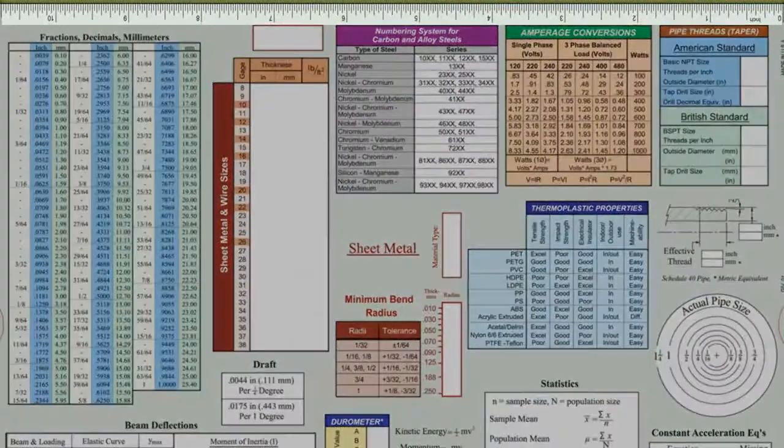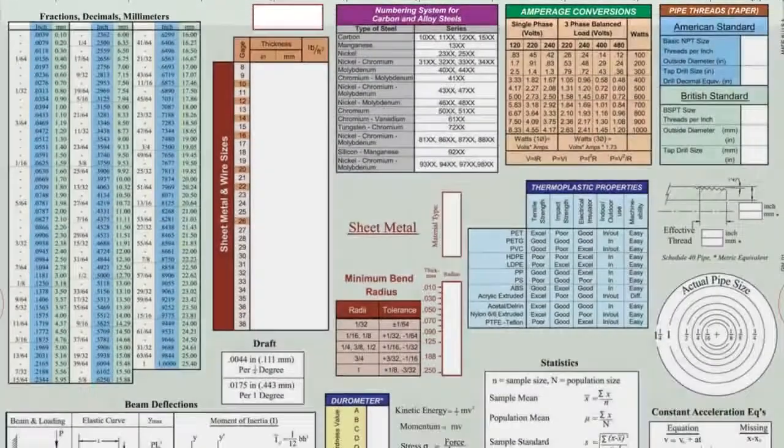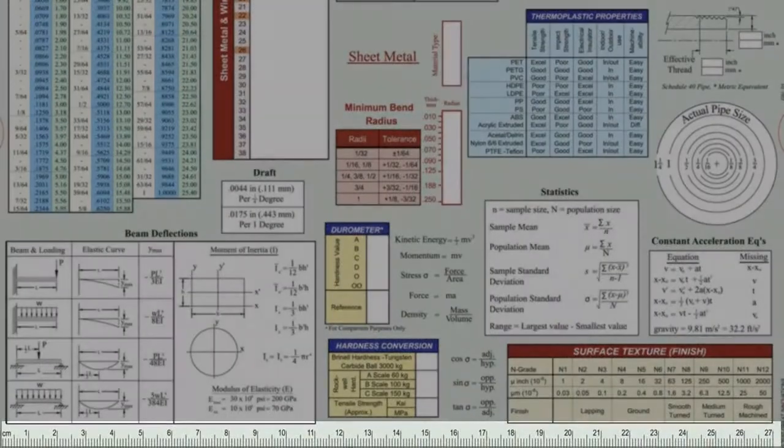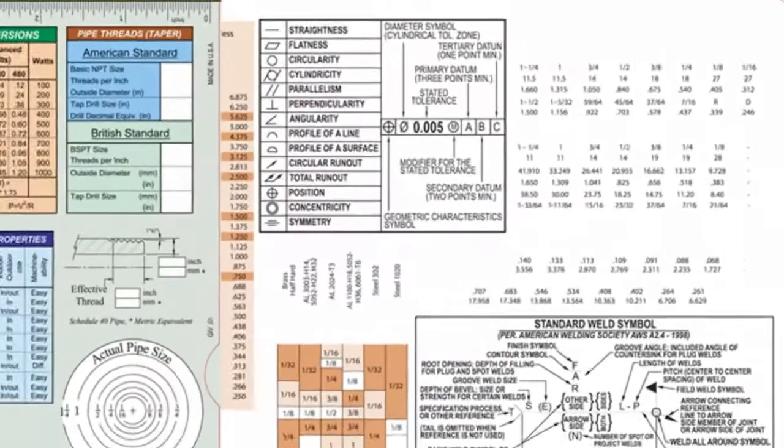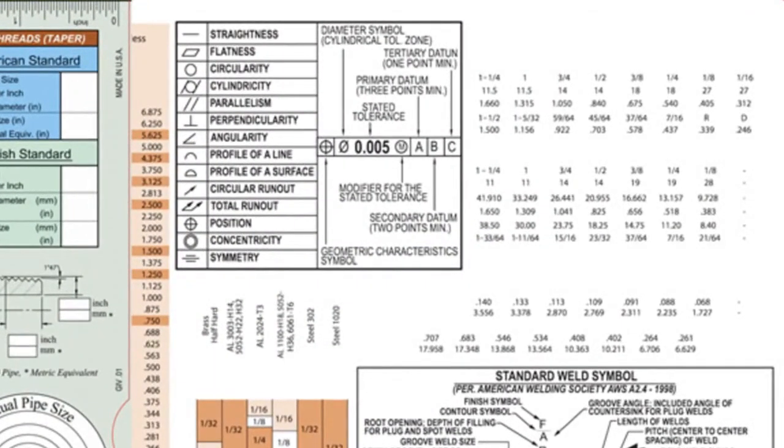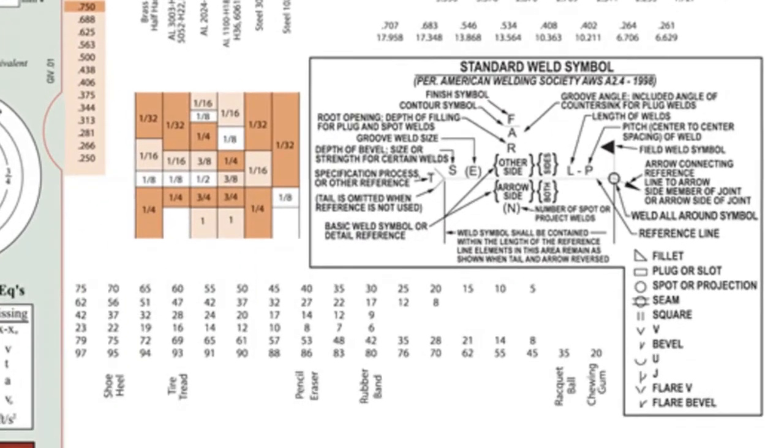Rulers for inches and millimeters complete the back of the slide chart on the top and bottom, respectively. Pull the sliding card out to the right, and you'll find two more tables for call-outs for geometric dimensioning and tolerancing, and below that, call-outs for standard weld symbols.